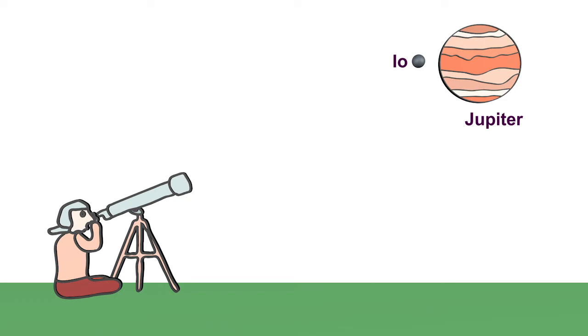Ole Römer took over the basic idea from Galileo. In his day it was known that Jupiter's moon Io takes 42.5 hours to orbit Jupiter. Whenever Io is immersed in Jupiter's shadow, it cannot be seen from Earth. So you had a light source that was very far away and kept going on and off.